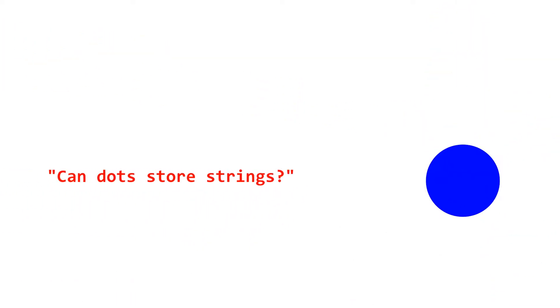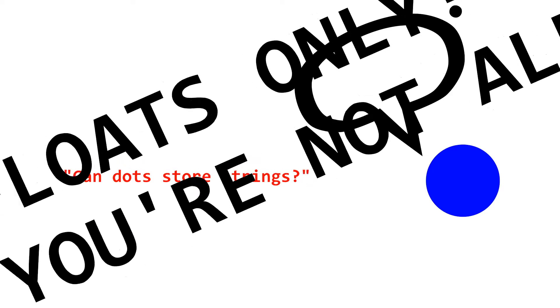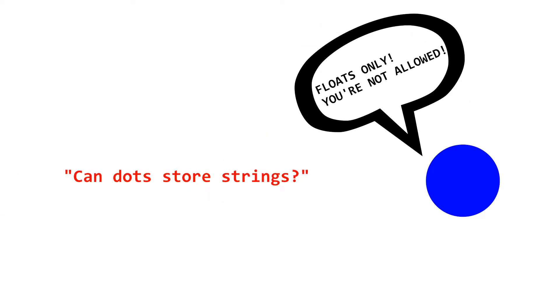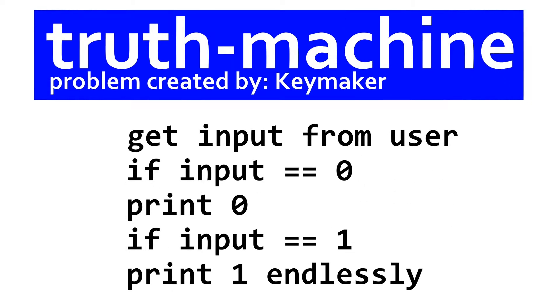It seems that direct printing is the only time that ASCII Dots likes strings, since dots can only store floating point numbers. ASCII Dots also has support for input as a number, which means that a truth machine program can be made. If you want to know what a truth machine program is, pause the video to read the description now — I'm sick of explaining it in every video.